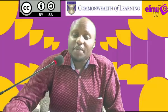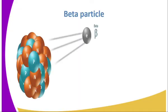What about the beta particle? A beta particle, which is a result of radioactivity, has no mass. It resembles an electron, and an electron has a charge of negative one. We will use these two properties of alpha and beta particles to describe their effect on matter.